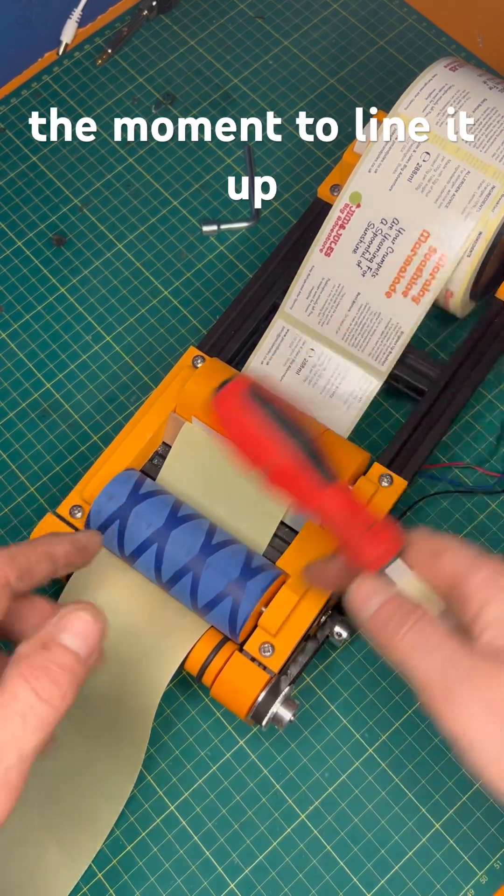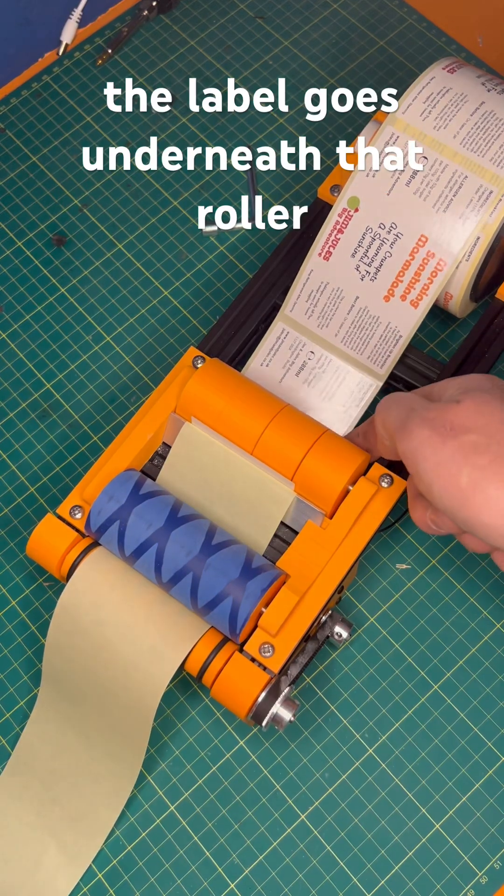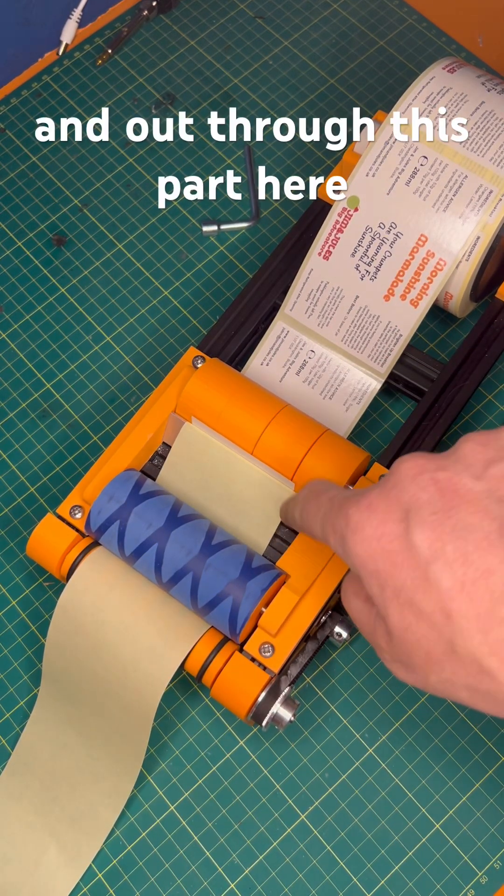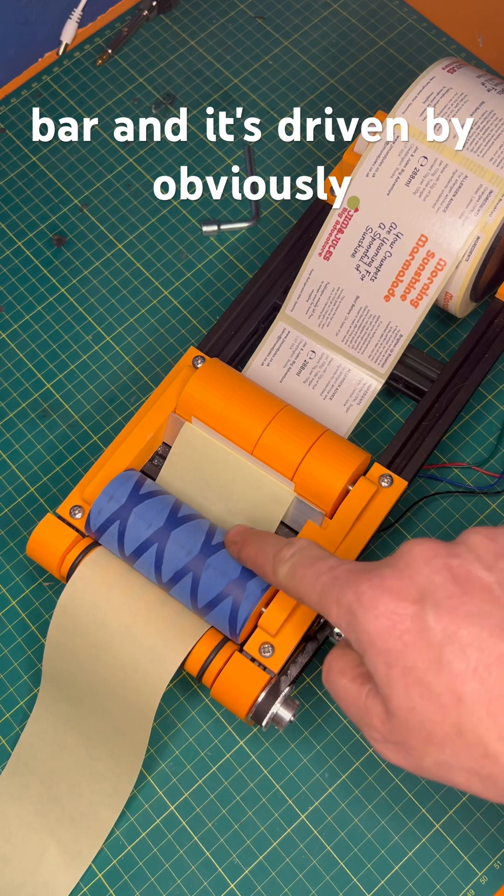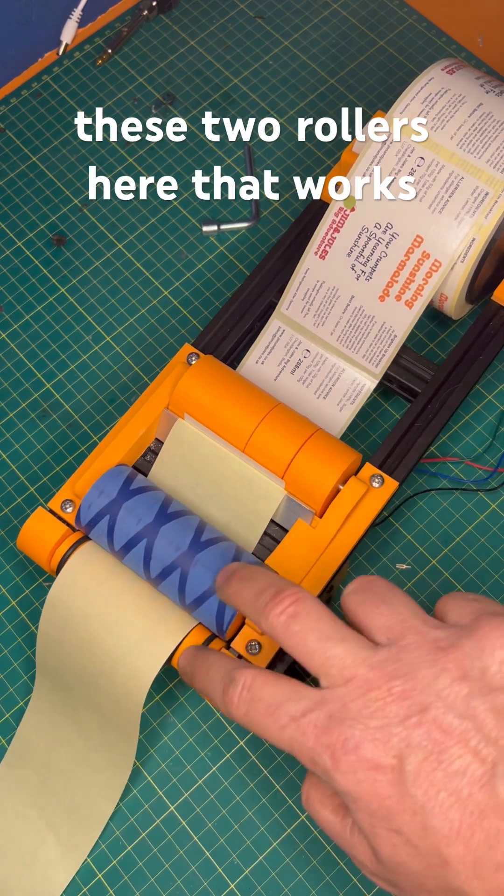The way this works at the moment, to line it up, the label goes underneath that roller and out through this part here, which pulls it off on this bar and it's driven by these two rollers here.